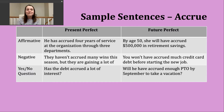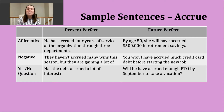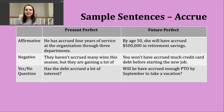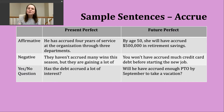For a negative present perfect sentence, the structure is: subject + have or has + not + participle form of the verb. Example: 'They haven't accrued many wins this season, but they are gaining a lot of experience.' This came from a sports context, referencing tennis players on a high school team — collectively they were not building up many wins, but the speaker found the positive: they were getting experience.